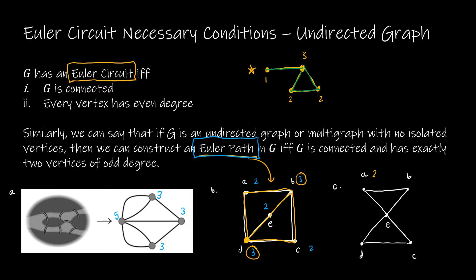For the last graph, the degrees are two, two, four, two, two — all even degrees. When you have all even degrees, you get to start wherever you want and then continue completing circuits. Starting at E: go to A, then to B, then to E, then to D, then to C, then back to E. Or starting at A: A, B, E, C, D, E, A. There are several options. I can start at any one of those vertices and it will work out as an Euler circuit.